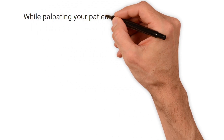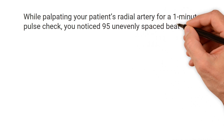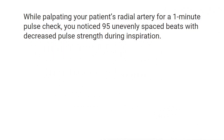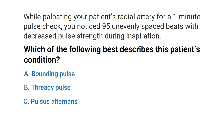While palpating your patient's radial artery for a one-minute pulse check, you noticed 95 unevenly spaced beats with decreased pulse strength during inspiration. Which of the following best describes this patient's condition? A) Bounding pulse, B) Thready pulse, C) Pulsus alternans, or D) Pulsus paradoxus. Do you know the answer? Let's break it down.